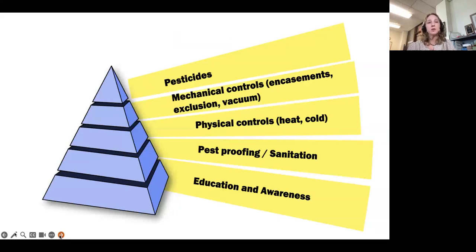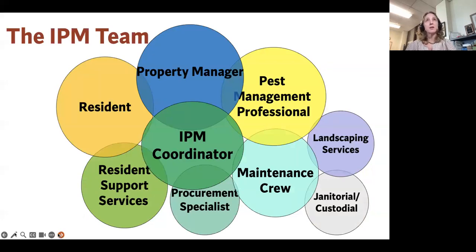Another way to look at IPM comes from the Pennsylvania IPM program. IPM in practice is like this pyramid. We start with education and awareness. Then pest proofing and sanitation. Then we move to physical controls, which could be heat or cold. Then we add mechanical controls, which could be mattress encasements when you're talking about bed bugs, exclusion, and vacuum, which is a really valuable pest control tool. And then of course, at the top of the pyramid is pesticides. We're still using pesticides.